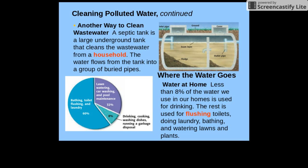Another way to clean wastewater, especially if you live in a rural area without a town or city water system, is a septic tank. A septic tank is a large underground tank that cleans the wastewater from a household. Water flows into the tank from the pipes, the heavier sludge sinks to the bottom, and the water is allowed to seep out into the surrounding soil, where it gets cleaned naturally.